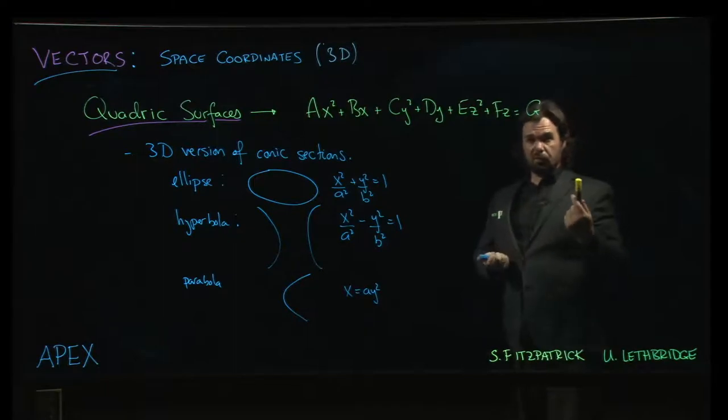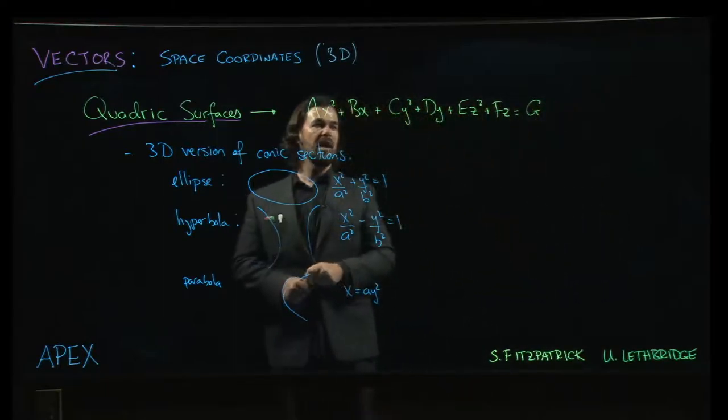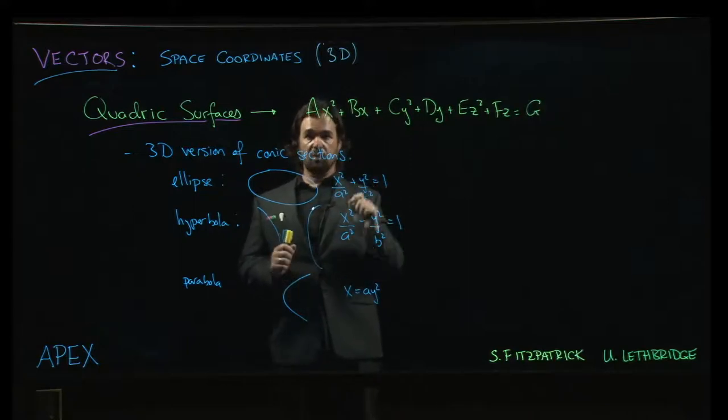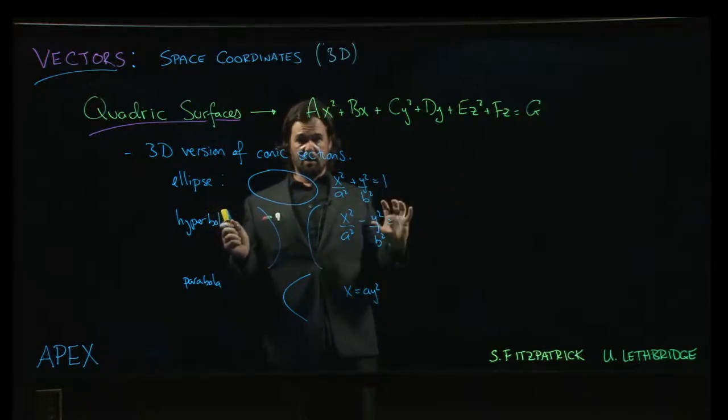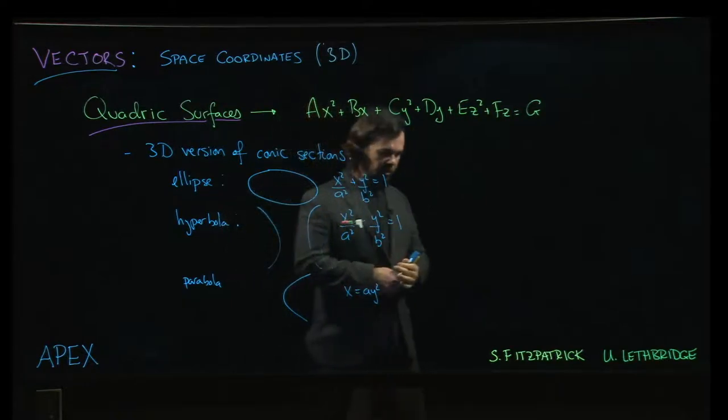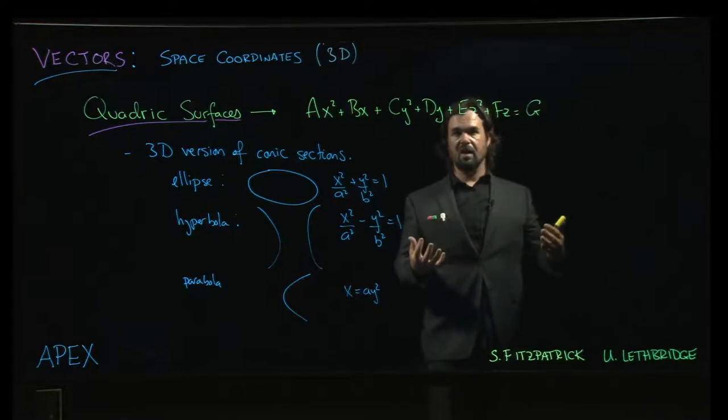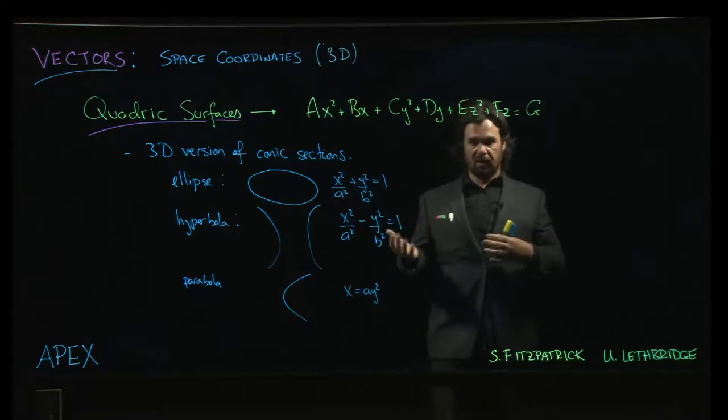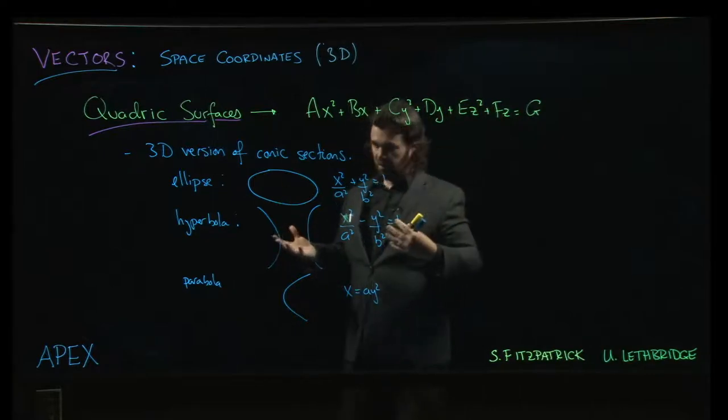If we wanted to do fully general quadratic surfaces, we would also have to allow for quadratic terms that combine variables - x times y, y times z, x times z. These so-called cross terms can show up. That really complicates things. Focusing on quadratic surfaces of this type lets us concentrate on ones that are aligned with respect to the coordinate axes.